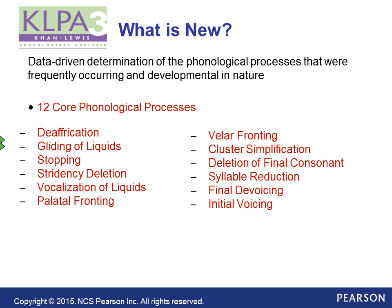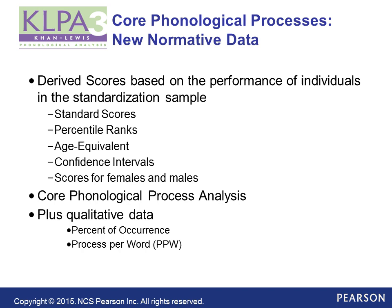What makes these core processes special? Through the normative data, you are able to derive standard scores based on the performance of individuals in the standardization sample. On these core phonological processes, you can derive standard scores, percentile ranks, age equivalents, confidence intervals, and scores for females and males. We also have item analysis and some qualitative data — including the percent of occurrence of each process and a new metric called 'processes per word.'